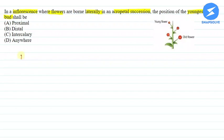The first option is proximal. What does proximal mean? The flowers will be born at the bottom or close to the base. This is proximal.